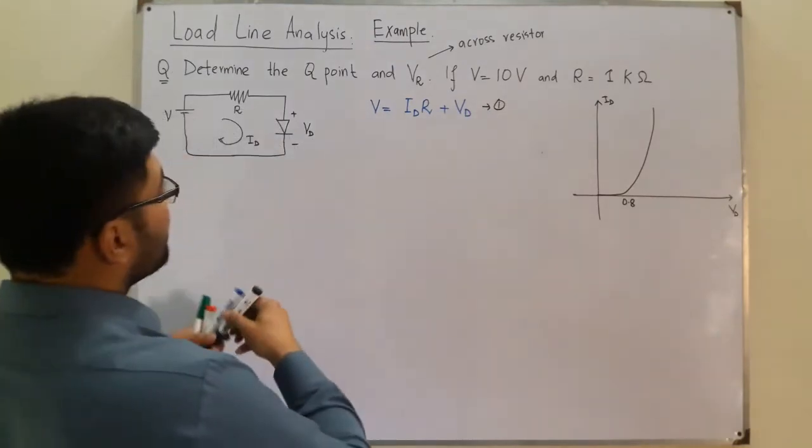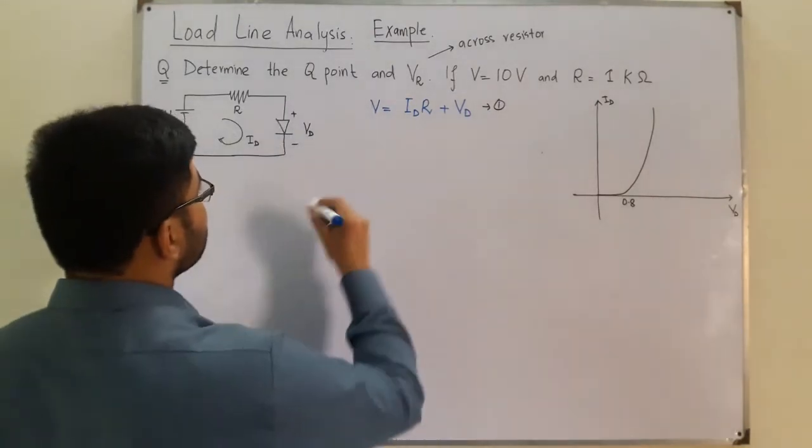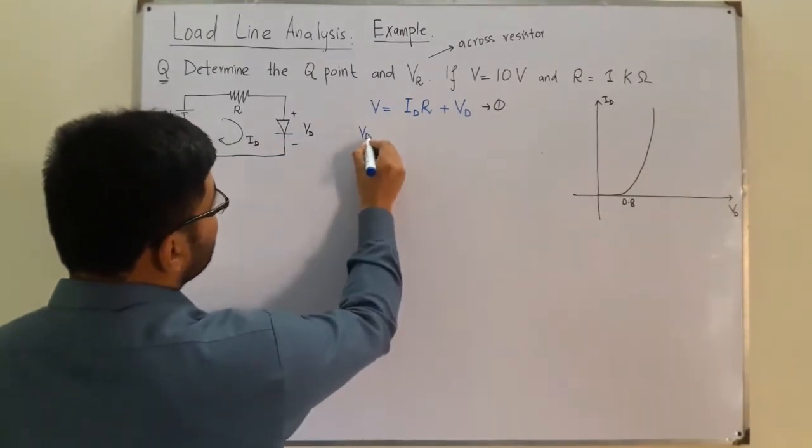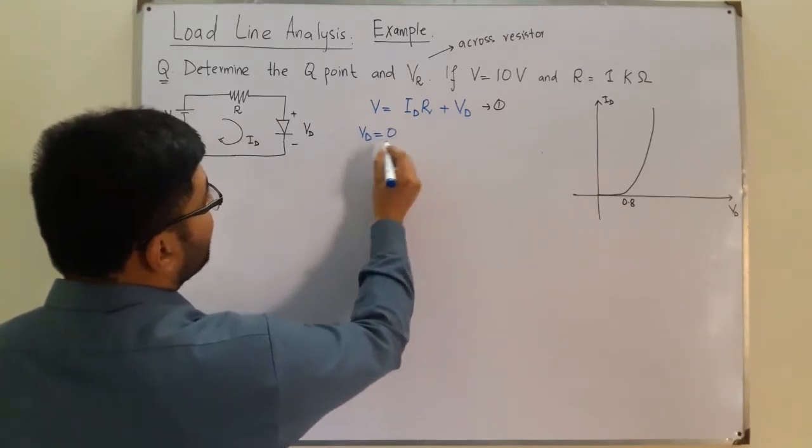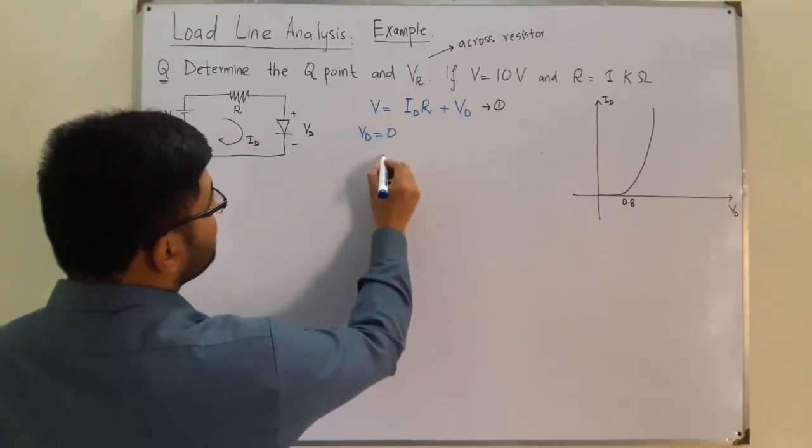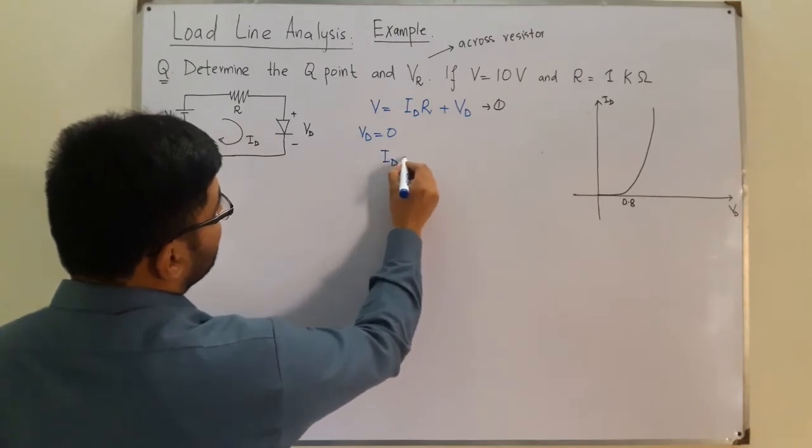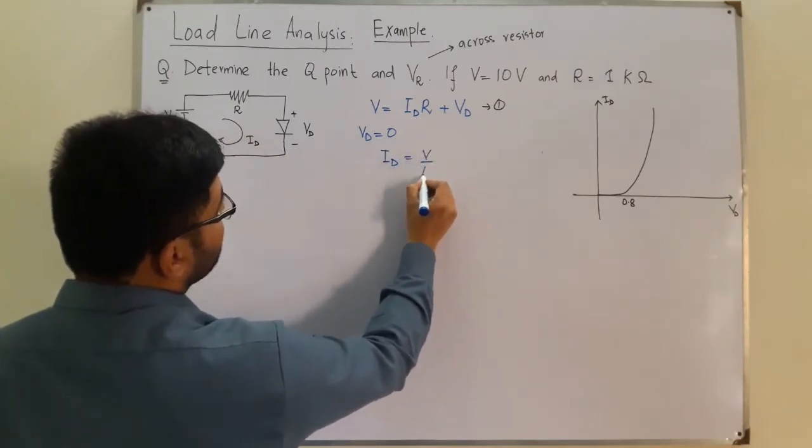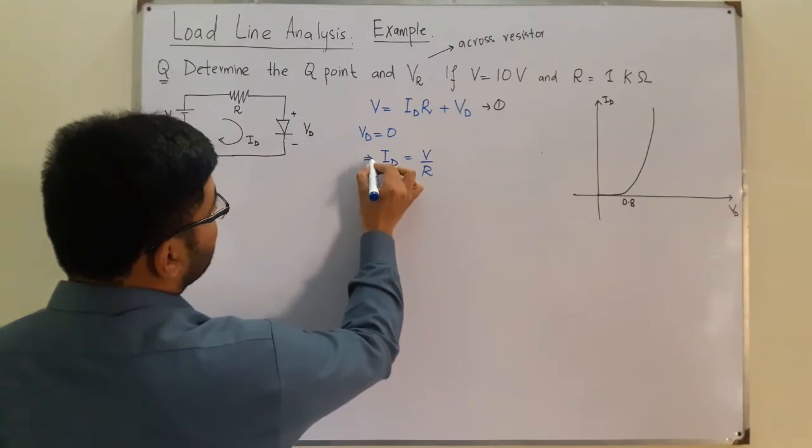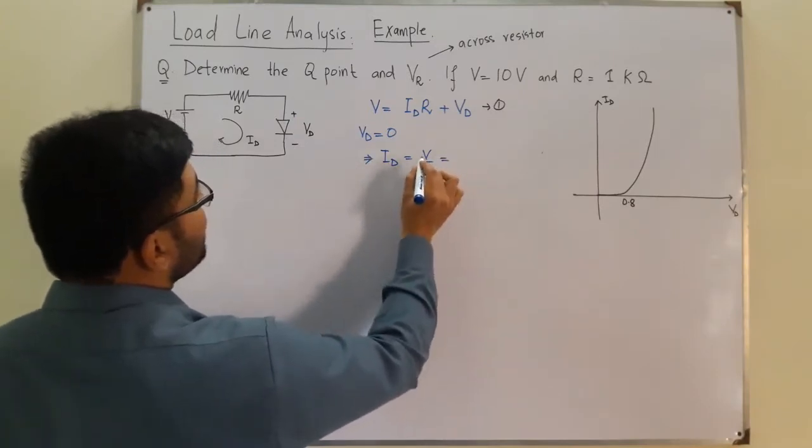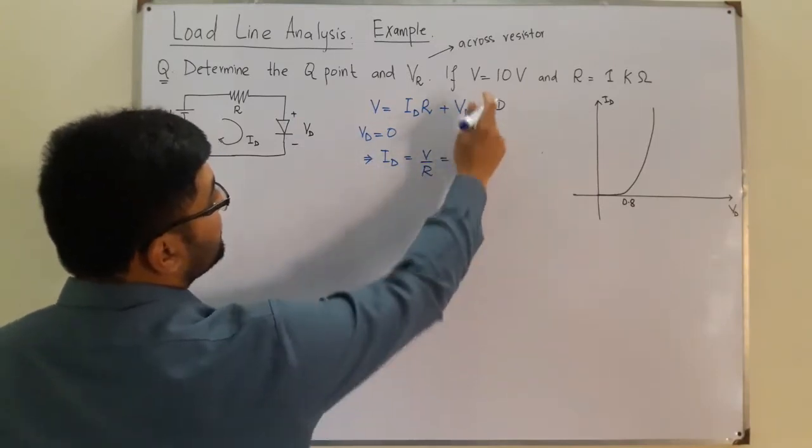By putting VD equal to zero, what happens? V equals ID times R, so ID would be equal to V upon R. Putting in the values, we have V equals 10 volts.